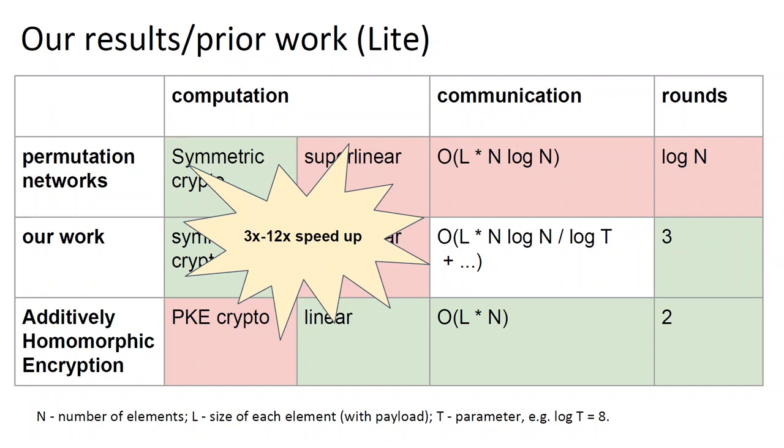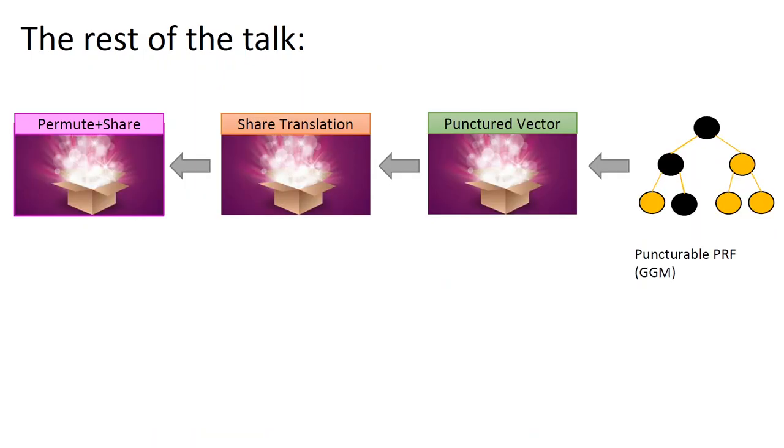All the protocols I discuss in this talk will be semi-honest. Here is the plan for the rest of the talk. Recall that secret shared shuffles can be constructed from two permute and share protocols, which does the same thing except that one party controls the permutation. To build this protocol, we will build what we call a share translation protocol, which is exactly that pseudorandom variant of permute and share I was talking about before. We will show how to build it from oblivious punctured vector, which can in turn be built from punctured PRFs.